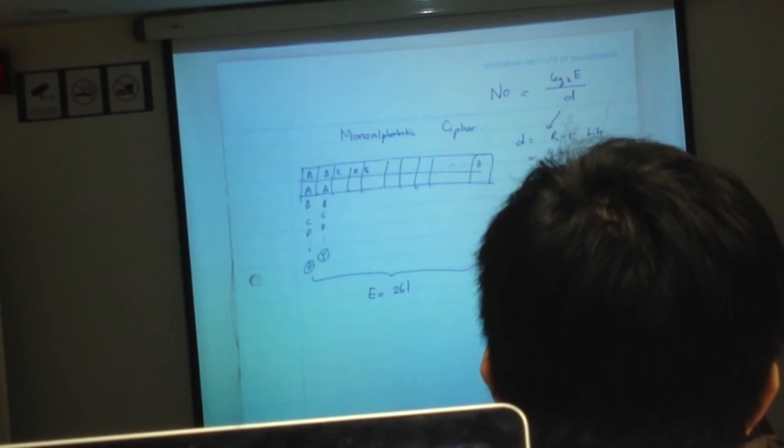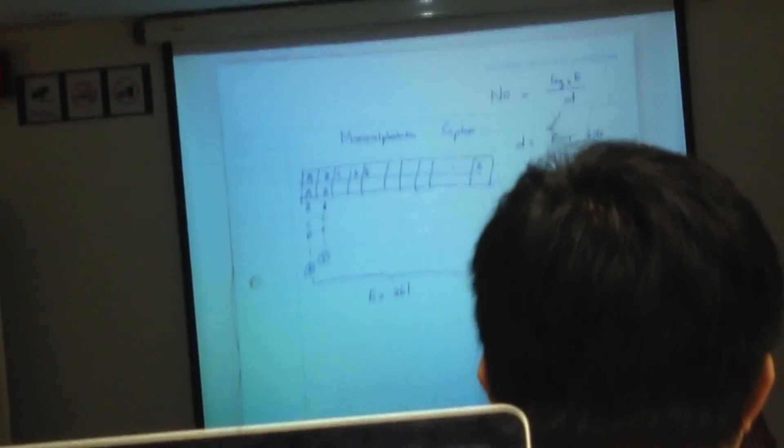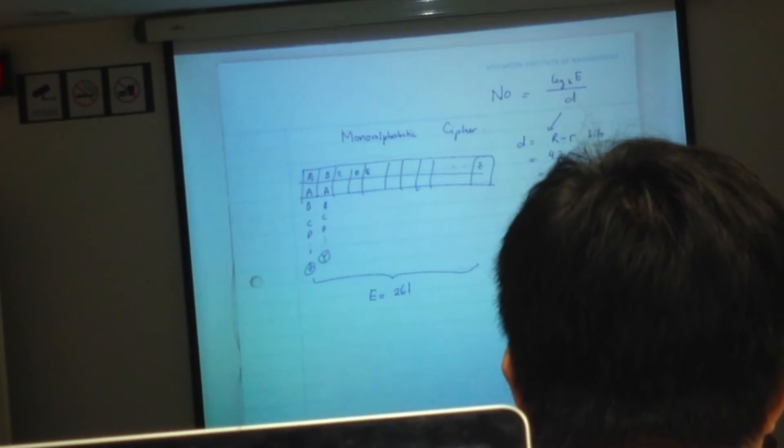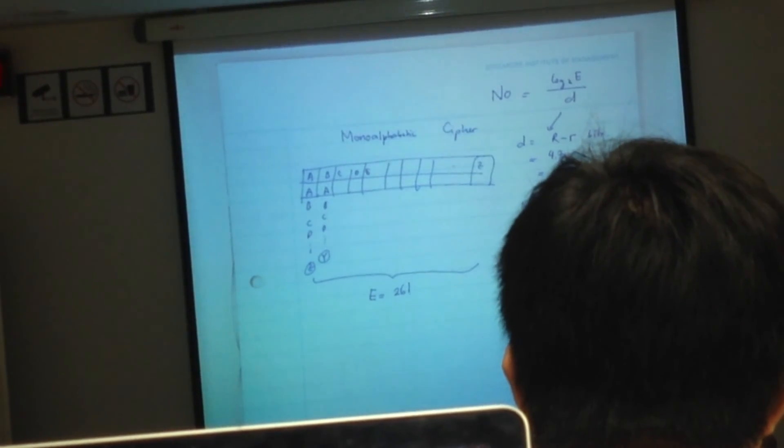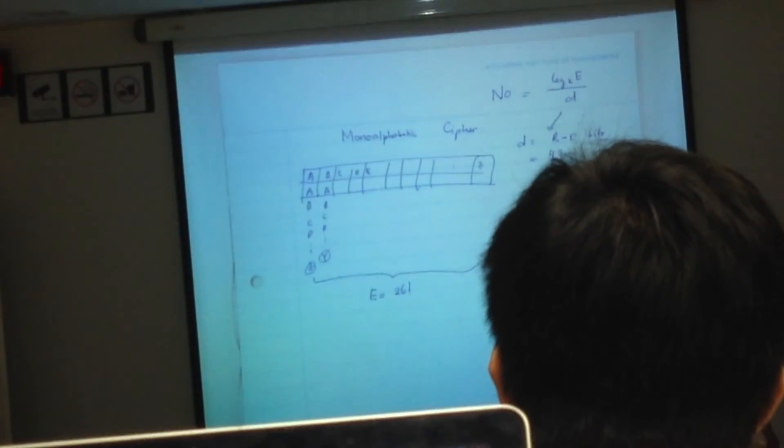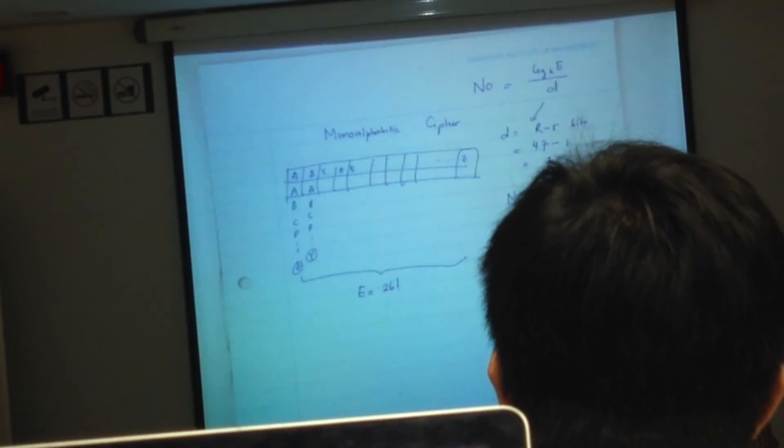So now, if I want to apply this formula, I will have N0 is equal to log 2 of 26 factorial divided by 3.7. Then you can use your calculator. Here, we will get around 88.4 divided by 3.7.